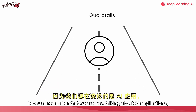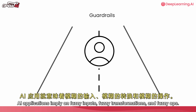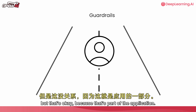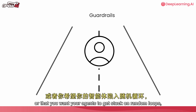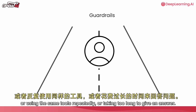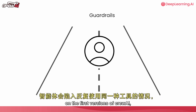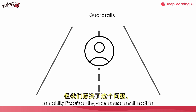The next element is guardrails, and guardrails are so important. We're now talking about AI applications, and AI applications imply fuzzy inputs, fuzzy transformations, and fuzzy outputs. That means you won't necessarily get strongly typed results, but that's okay — that's part of the application. That doesn't mean you want hallucination, or that you want your agents stuck in random loops, using the same tools repeatedly, or taking too long to give an answer. That was actually a problem we had early on in the first versions of CrewAI.